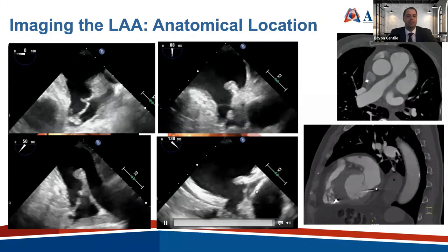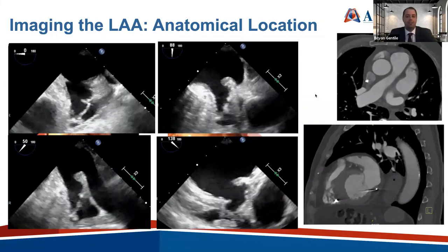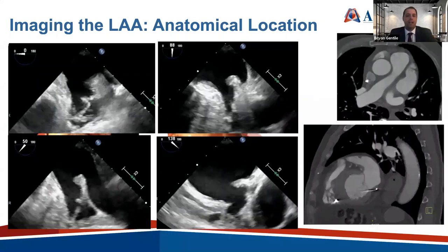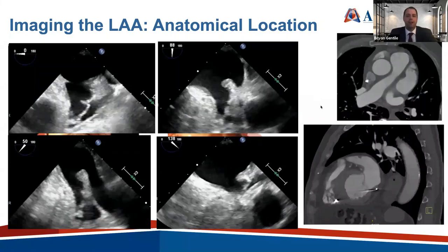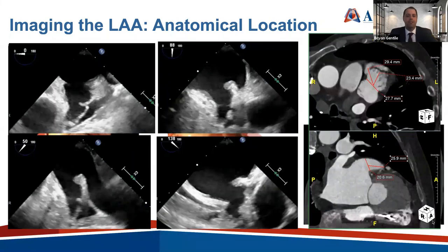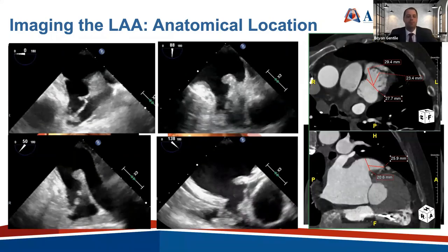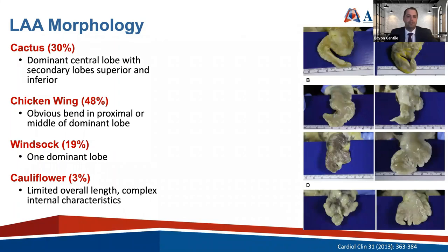Similarly with CT, you can't just use the three typical views — axial, coronal, and sagittal. You need to get out to that RAO caudal and RAO cranial view to truly understand the morphology of the appendage. In obtaining these views, we can determine morphology. Every left atrial appendage is different — very much like a fingerprint — even though we group them loosely into four categories: cactus, chicken wing, windsock, and cauliflower.